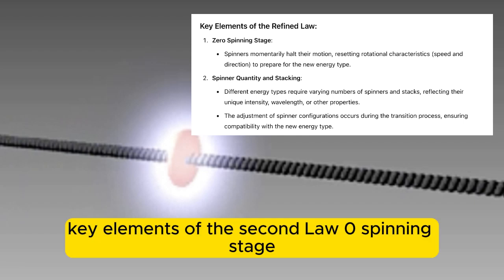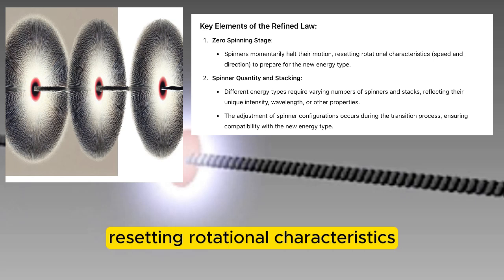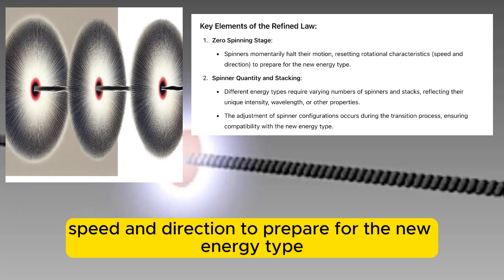Key elements of the second law. Zero-spinning stage: spinners momentarily halt their motion, resetting rotational characteristics — speed and direction — to prepare for the new energy type.